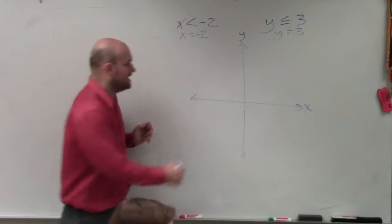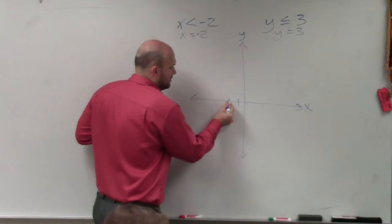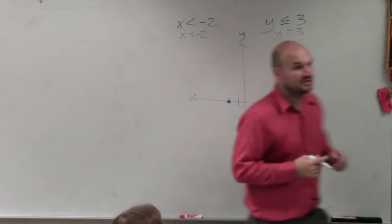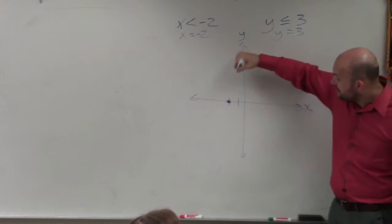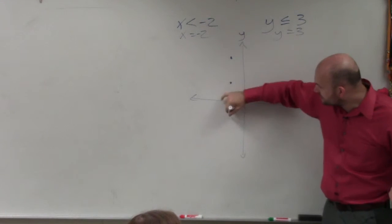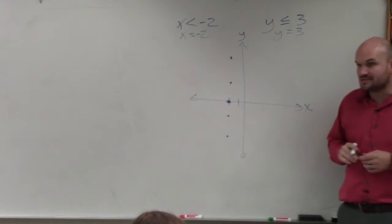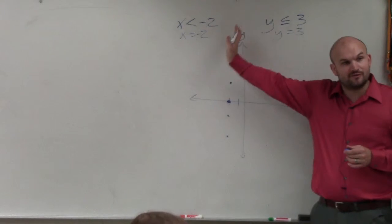So if they say x is equal to negative 2, when y equals 0, x is equal to negative 2. But x always equals negative 2. That's the only thing we know is x equals negative 2. It doesn't matter what y is equal to. x always equals negative 2. So that's going to create a vertical line.